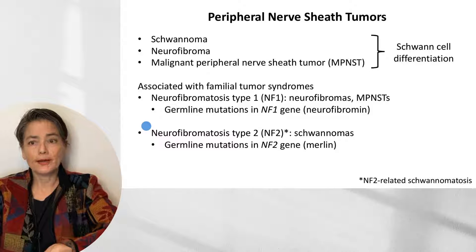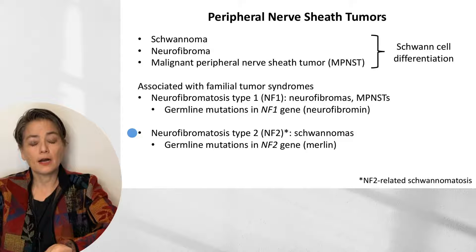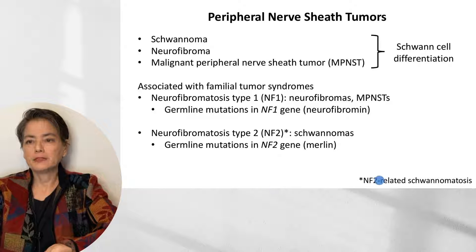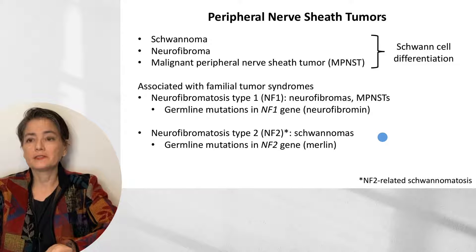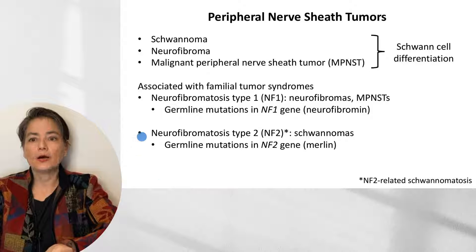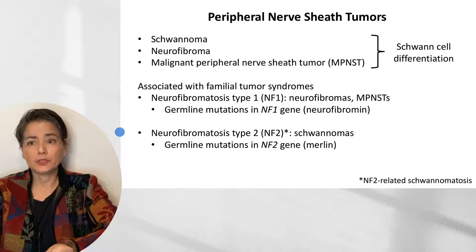Neurofibromatosis type 2, or NF2 — you would think from the name it too has abundant neurofibromas, but that is not the case. It is characterized instead by multiple schwannomas as well as meningiomas. Because of that particular finding and its alignment with schwannomatoses, there has been a recent position paper suggesting the name be changed from neurofibromatosis type 2 to NF2-related schwannomatosis. This is still in early days. You will need to know neurofibromatosis type 2 for your wards and your boards, so that will be the terminology retained in this video.